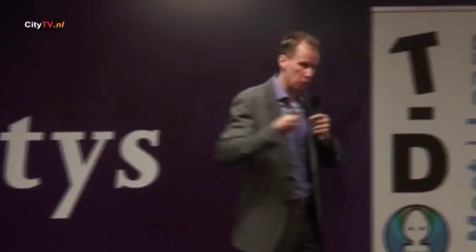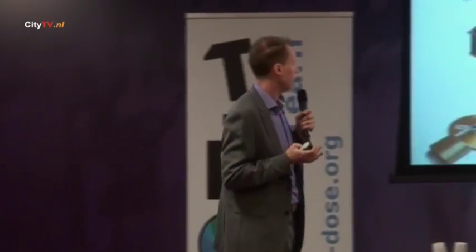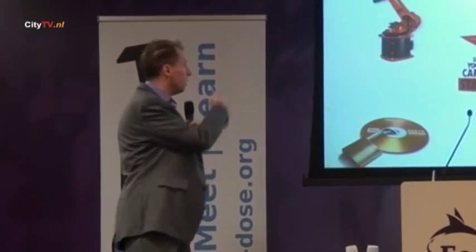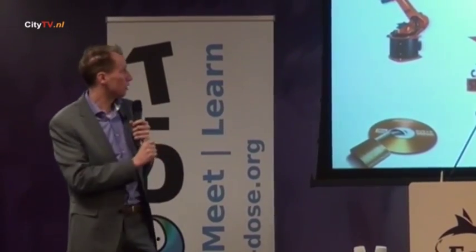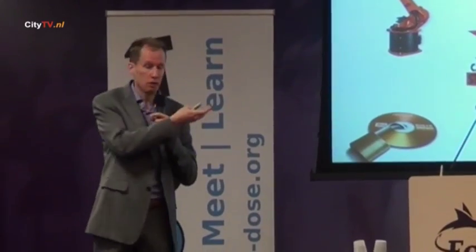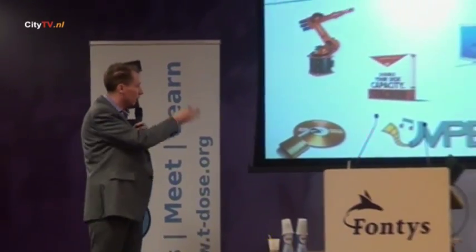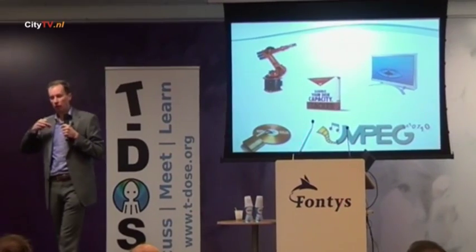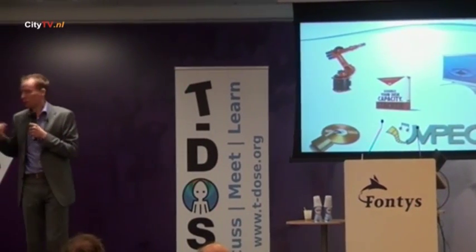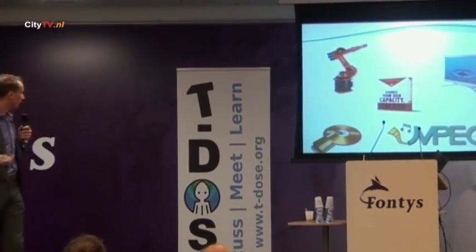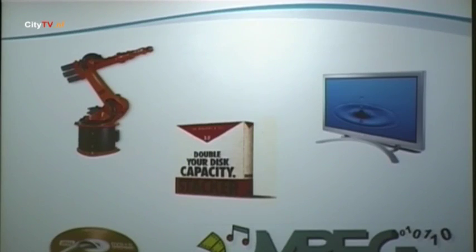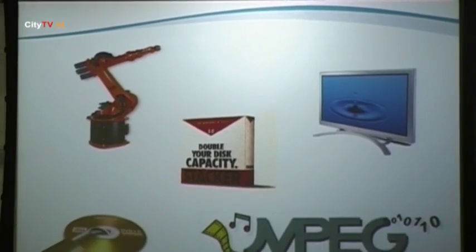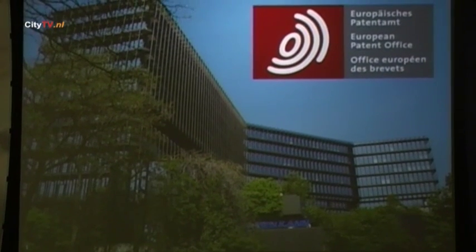With that rule it was allowed to patent just about anything, as long as you could somehow present it as a technical invention - like it was a robot. You can double your disk capacity, have a better picture on screen, push more audio and video through a transmission channel, detect copying and prevent it, or store more data on a video disc. That was essentially the opinion of the European Patent Office.